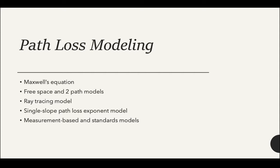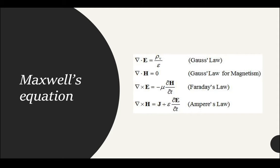Here is the path loss modeling. The first one is Maxwell equation, then free space and two path models, ray tracing model, single slope path loss exponent model, and measurement-based and standard model. Signals consist of electromagnetic waves. Maxwell equation describes how magnetic field and electric field are related to each other. The downside to Maxwell equation is that there are other more simple methods. It might not be practical to design systems with a complex method such as this.